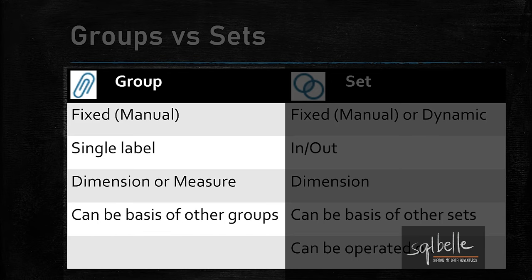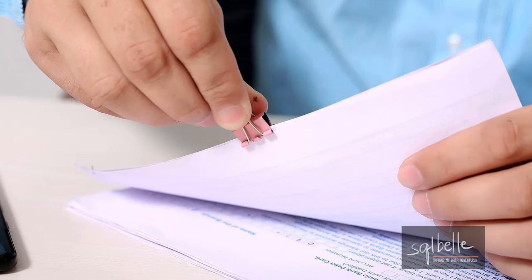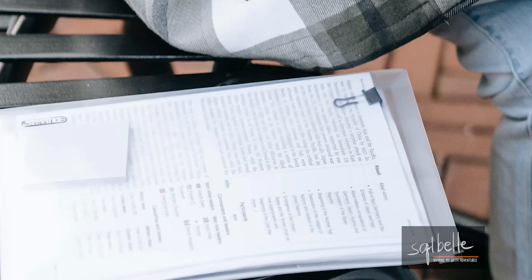Groups in Tableau allow us to organize and combine different values under a single label. We can use this for both dimension or measure values, and the visual cue of a group is a paperclip. Think of what a paperclip is used for — it's to put together pieces of paper, allowing us to organize a stack better or carry it as a single unit. In some ways, this is how Tableau groups work.